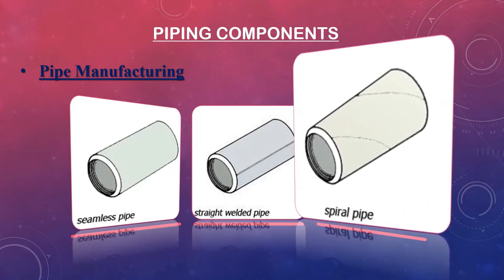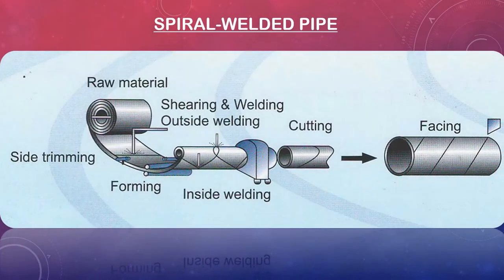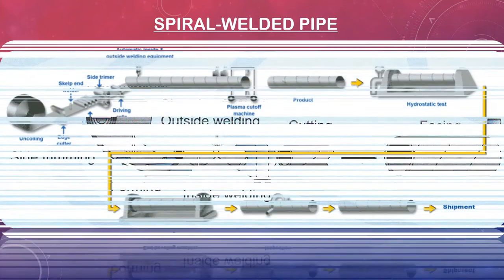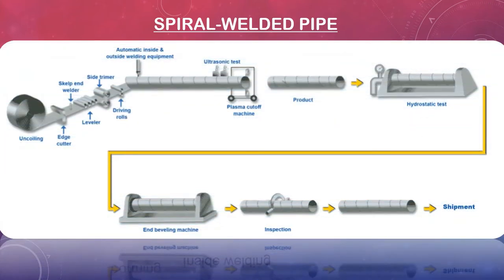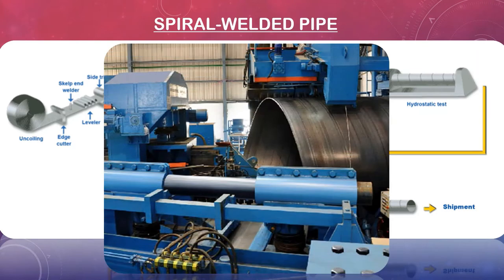Spiral welded pipe is produced from coils of steel that are unwound and flattened. The flattened strip is formed by angled rollers into a cylinder of the desired diameter. Interior and exterior welding seal the spiral seam. The pipe is cut to length and the ends are beveled if required. Spiral welded pipe is primarily used for water distribution service.